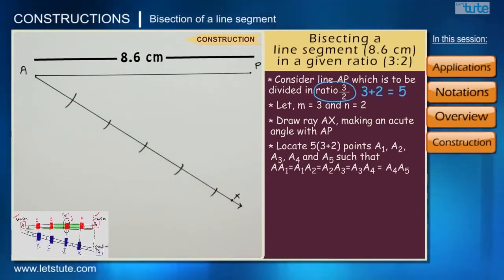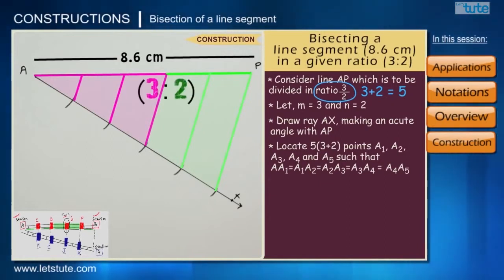The main idea is to divide the line segment into 2 smaller line segments where one will contain 3 parts and the other will contain 2 parts, thus giving us a ratio of 3 is to 2. Now, label all these 5 parts.